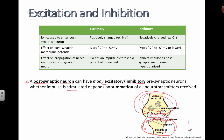Whether the impulse is stimulated or not — whether this continues to send off a signal — depends on the summation, or the total sum, of all the neurotransmitters received. So this neuron down here can actually be connected to multiple other neurons. Whether this thing fires or not depends on the summation.